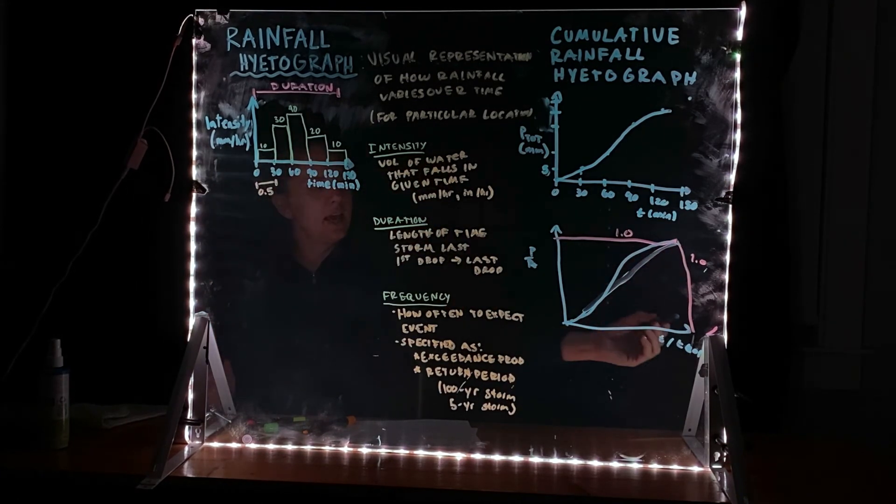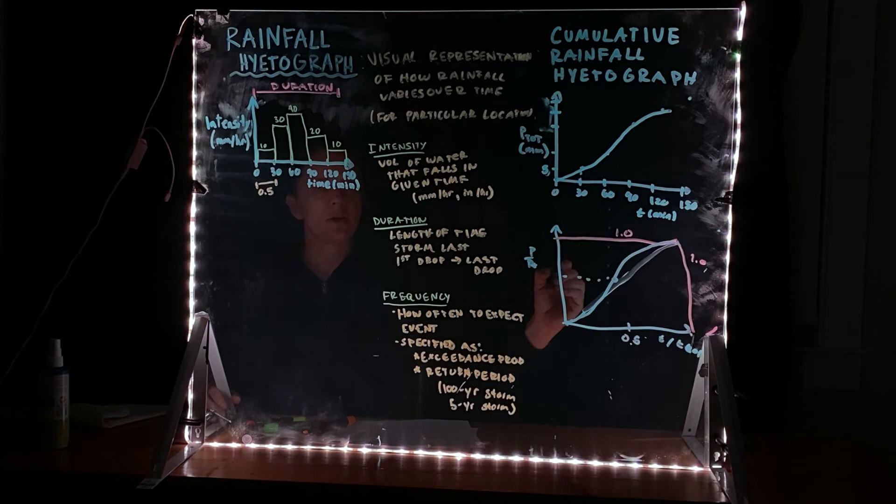So by the end, once you've reached the total duration of the storm, a hundred percent of the rain has fallen. But you can see at any particular time when the storm is halfway over, how much of that percentage of that rain has fallen.